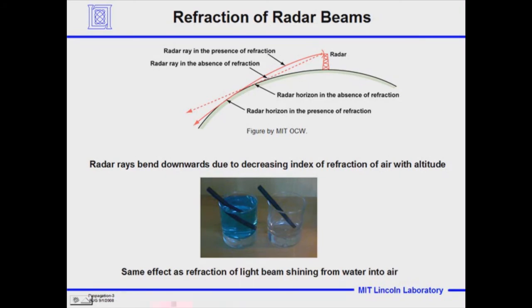It drops off exponentially. The index of refraction at the Earth's surface is very close to vacuum — it's 1.000350 — which is 350 parts per million away from a vacuum. That 350 parts per million we call the refractivity. In a normal atmosphere, refractivity drops about 40 parts per million per kilometer of height — sometimes as low as 25, sometimes as high as 75. We call it super refraction if it drops off more, say 100 parts per million per kilometer, and if it's over 160 parts per million per kilometer we call that ducting.